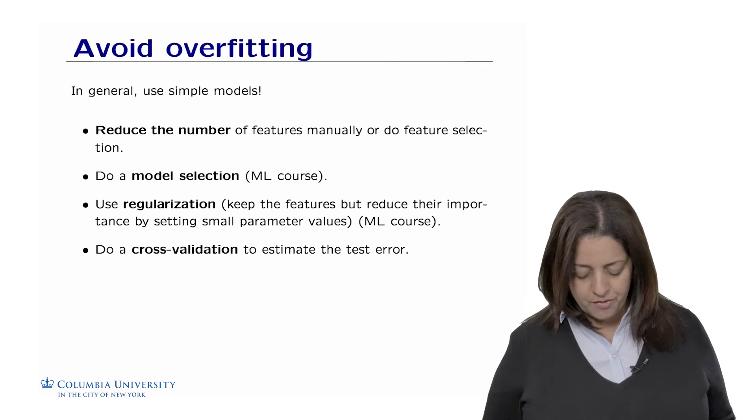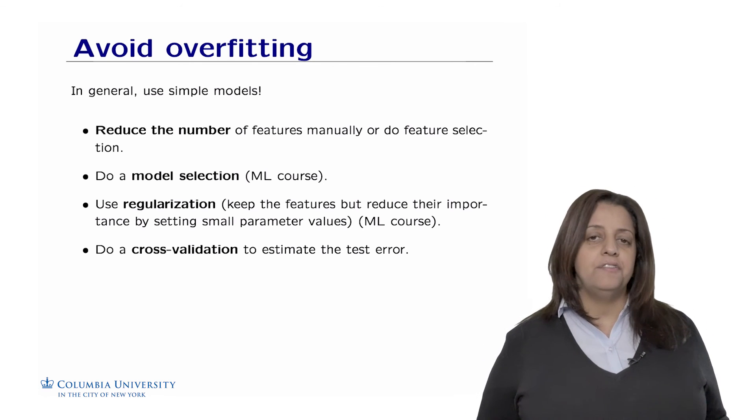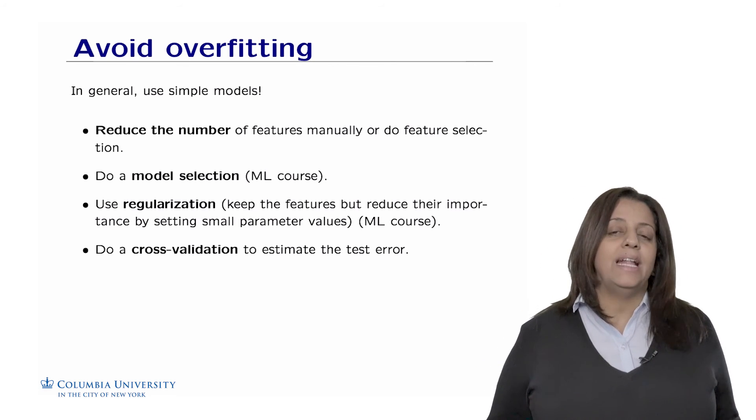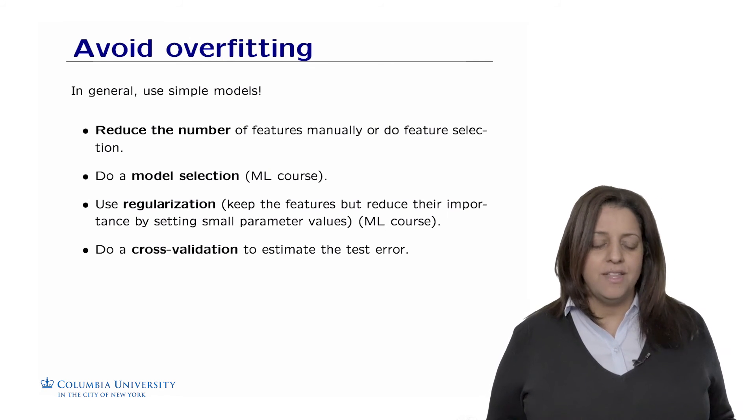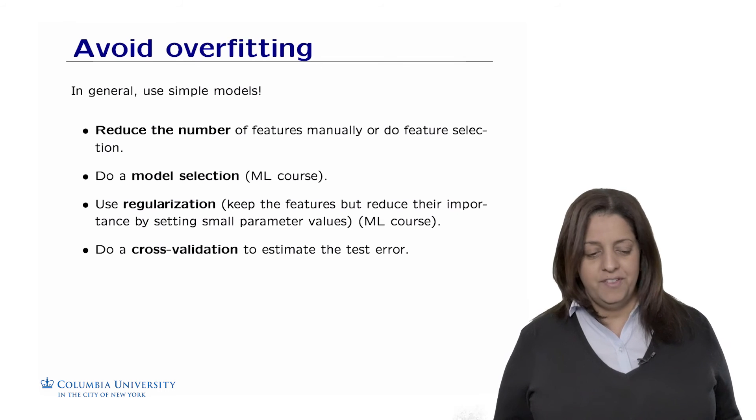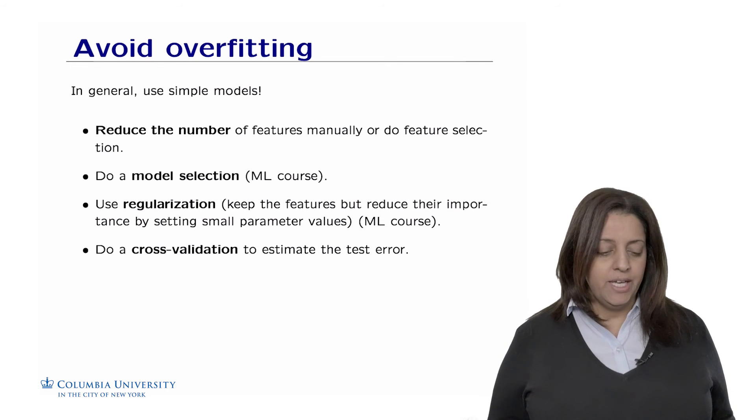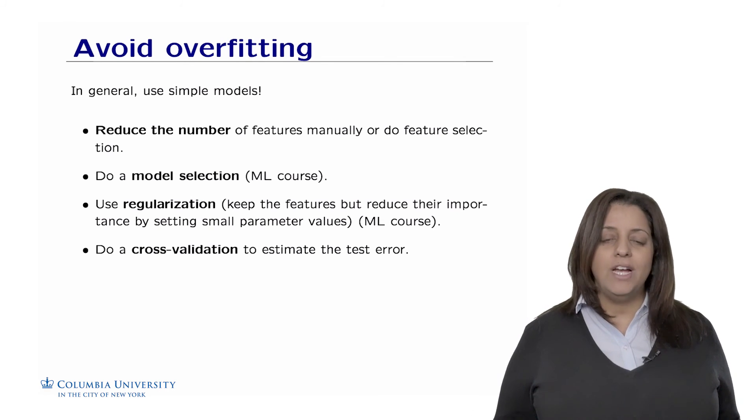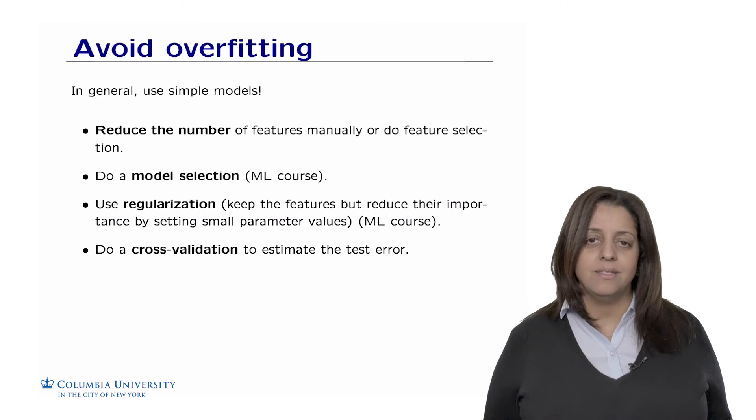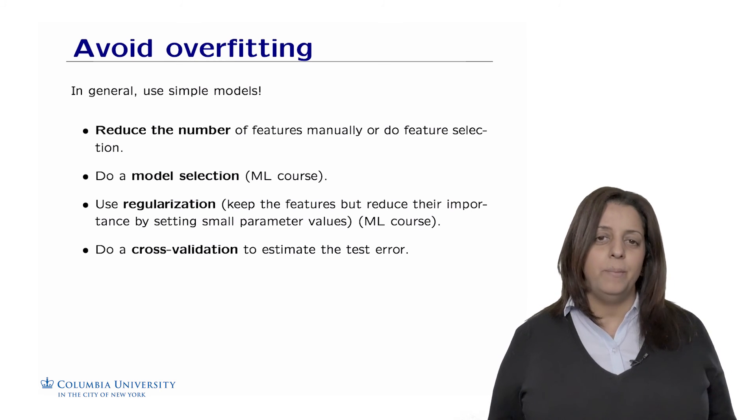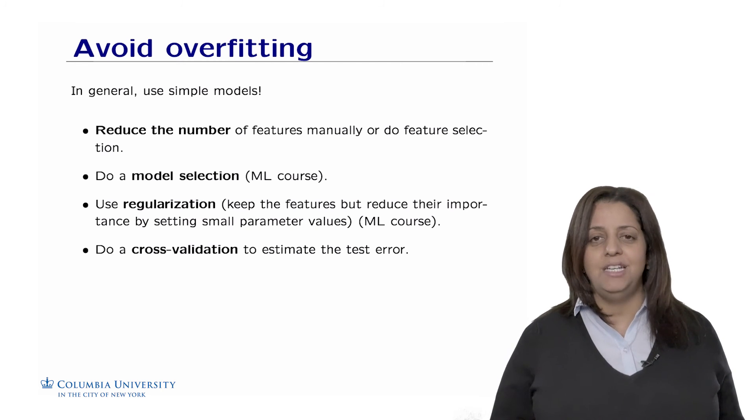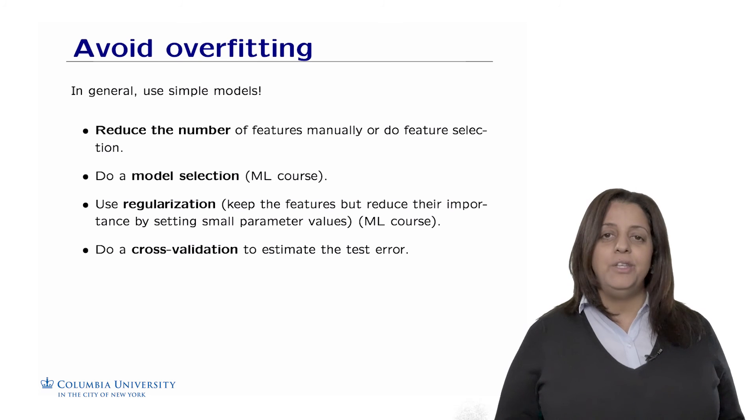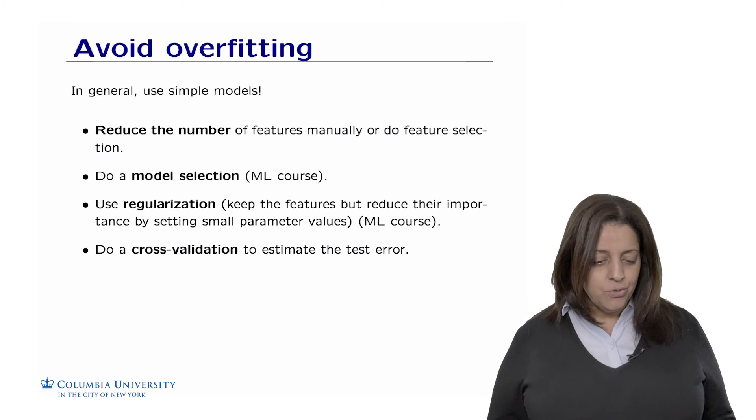So how do we avoid underfitting and overfitting in general? To avoid underfitting, we need to find models that at least do well on the training set. So this is easier than avoiding overfitting. To avoid overfitting, what we can do is, in general, try to avoid complicated models. Remember, we find this complicated model that describes trees. This model will make poorly on any other object except those seen for training. So in general, use simpler models. And the way to use simpler models is, for example, to reduce the number of features.